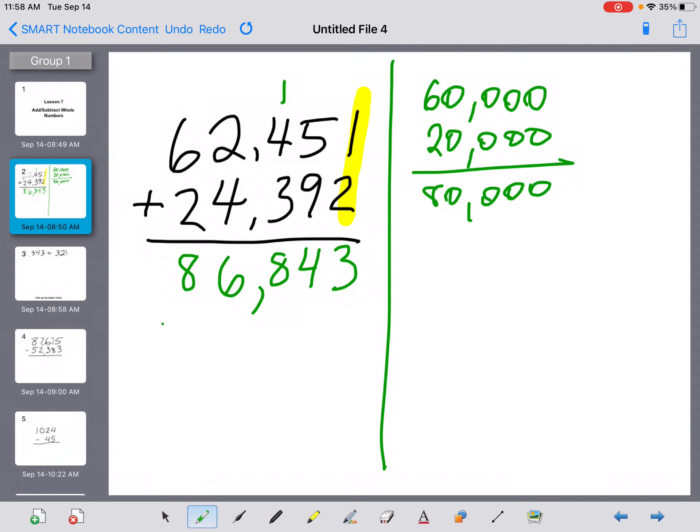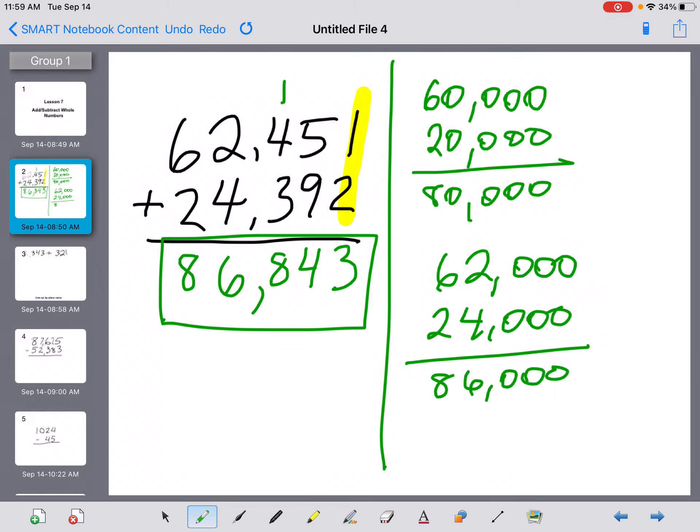Is that reasonable for the answer that I have come up with? Well, yes, it's pretty close to 80,000. And you know that there are more numbers we rounded off. So 86,843 is a reasonable answer. You would get a little more accurate if you were to round to the thousands place. So the first number would become 62,000 and our second number would become 24,000. And then when you add those together, you would end up with 86,000, which is a bit more of an accurate estimation for what your answer could be. But either of these is a good way to just do a quick double check of if your answer is reasonable.